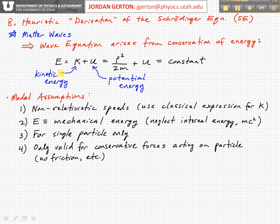This is only valid for conservative forces acting on that particle. If friction or any other non-conservative force that leads to energy dissipation is part of the system, then we have to add other terms to the Schrödinger equation, and what we arrive at today would not be completely accurate, although it's a good starting place.